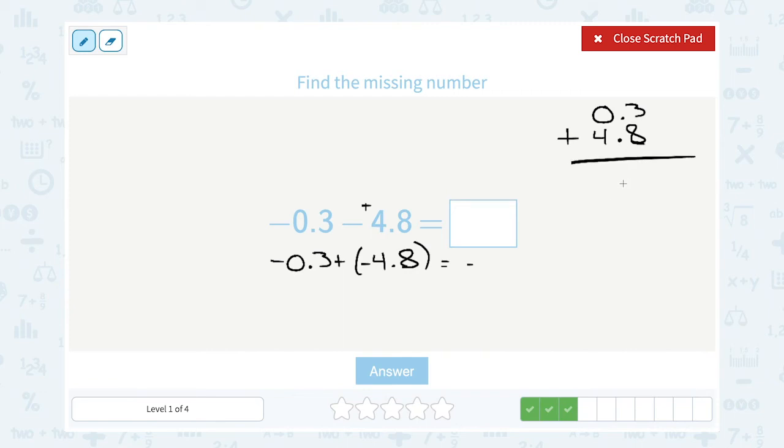Okay, lining up my decimal point. Now in the tenths place, 3 plus 8 gives me 11. So I'm going to put the 1 and carry 1 over. Okay, 4 plus 0 is 4, plus that extra 1 gives me 5.